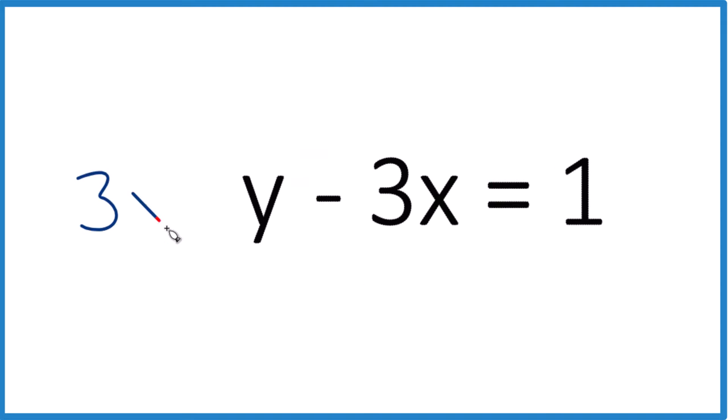Why don't I add 3x here to this side, because 3x plus negative 3x, that's 0.